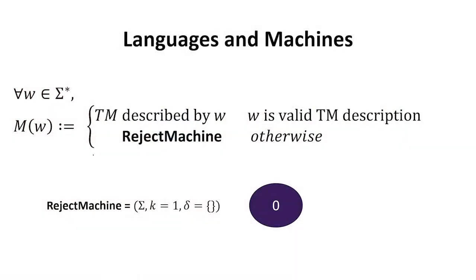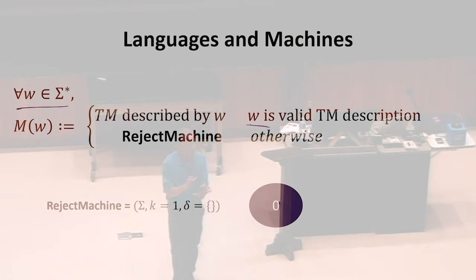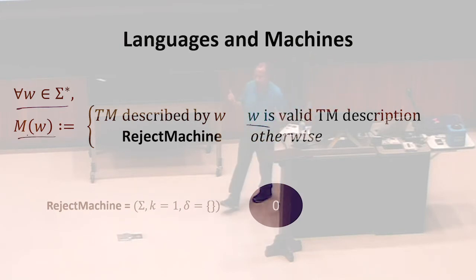What we're going to do first is define a function that maps a description of a Turing machine. It's going to take a string — w is any finite binary string. Either that's a valid description of a Turing machine; we'd have to specify carefully how we write down our Turing machines. Some machines are going to be valid, some are not. And if it's a valid description, we're going to produce the machine that that string represents.